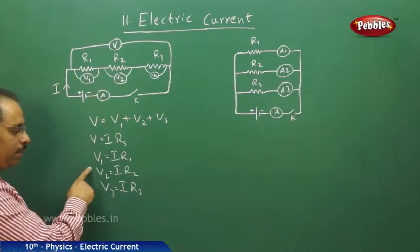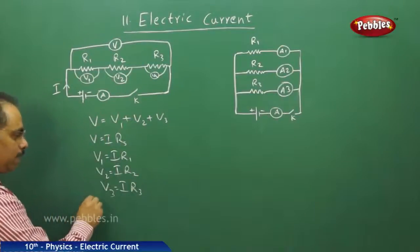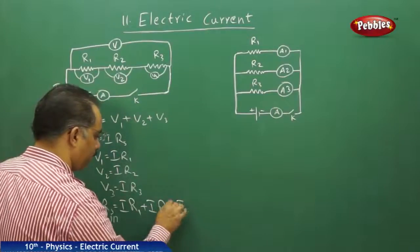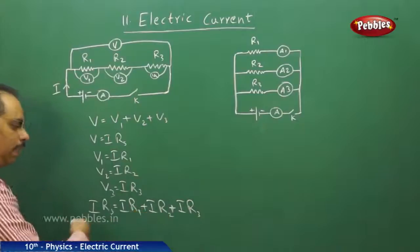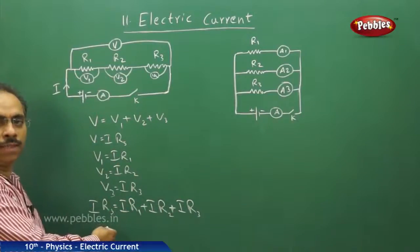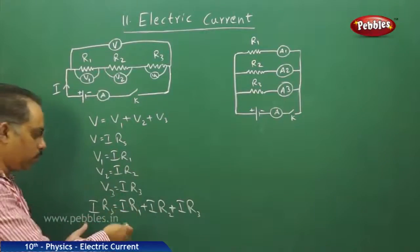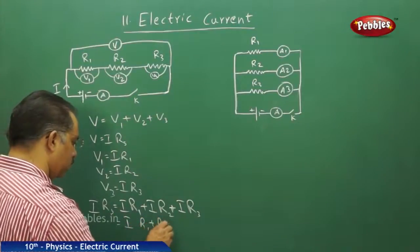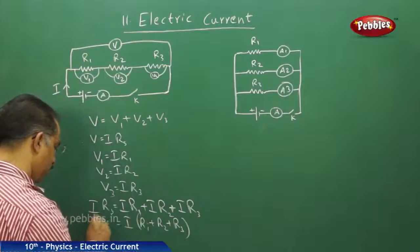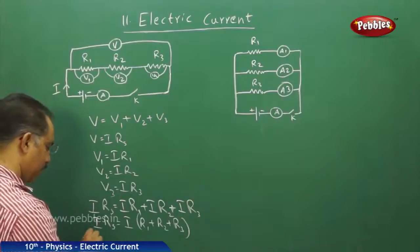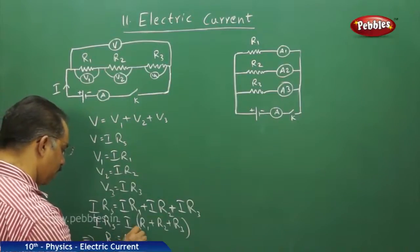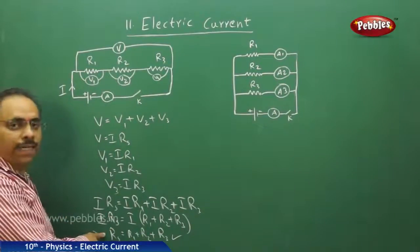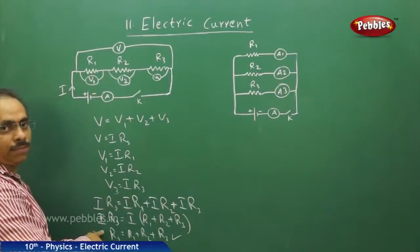Substituting V1, V2, V3, and V into the expression, I get I·Rs = I·R1 + I·R2 + I·R3. Taking I common on the right side and cancelling I from both sides, I get Rs = R1 + R2 + R3. This is the expression for the net resistance of all three resistances connected in series.